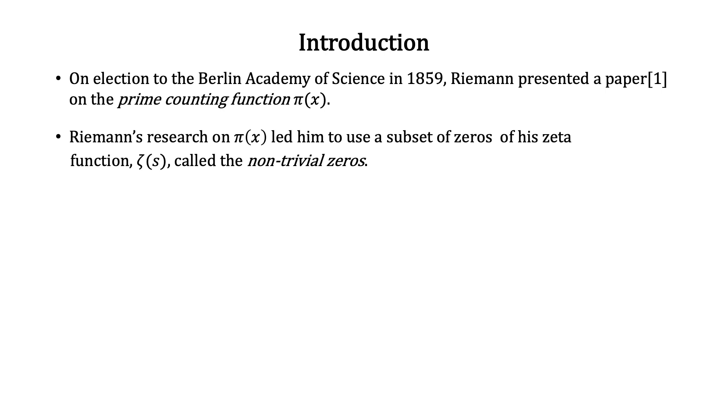Riemann, in research to create an expression for π(x), introduced complex functional analysis in the study of prime numbers. Using his zeta function ζ(s) to make use of a subset of zeros of ζ(s), denoted the non-trivial zeros.